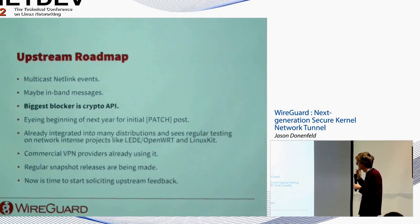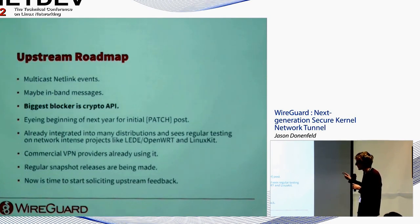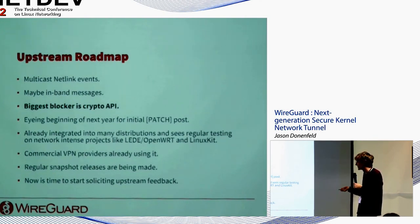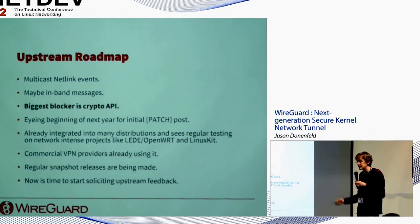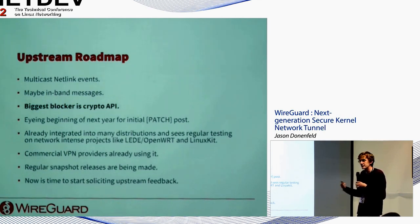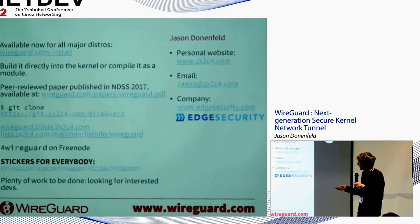Upstream roadmap: possible multicast netlink events for notifications, maybe in-band messages (maybe not), and the crypto API rework is top of the list. Once the kernel crypto API is improved, WireGuard will be ported from its stopgap solution to the new API, with the initial patch series hoped for sometime in 2018. WireGuard is already in many distributions, sees regular testing in OpenWrt and Linux, has commercial VPN providers selling services with it, and is used by top-100 websites and major financial institutions.